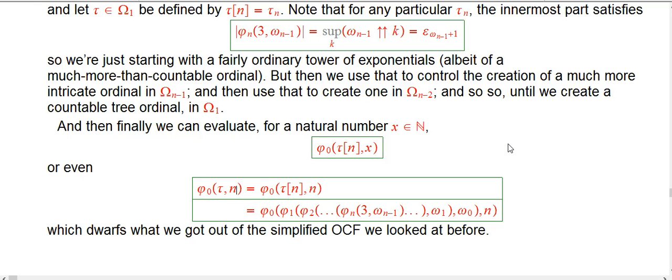That means if we take τ, which was the limit of all these finite τ_n's, and apply that to a natural number n - finally I get to use n for a natural number, which makes me feel better in terms of notation - by definition we just diagonalize. That's φ_0(τ_n,n).